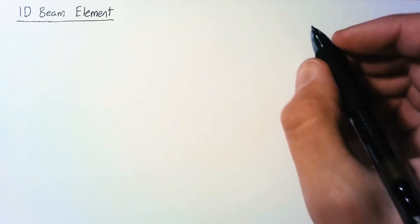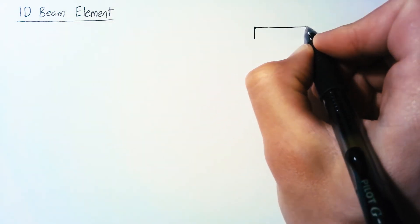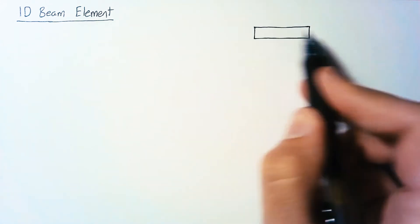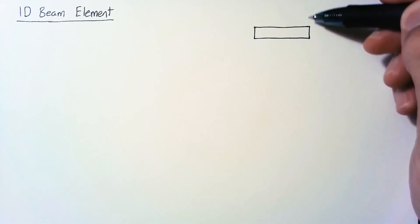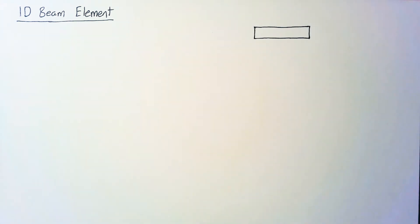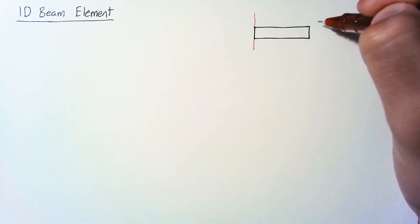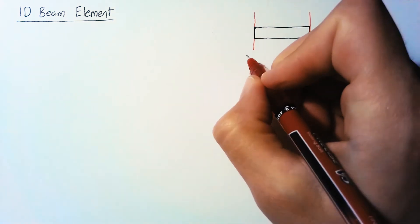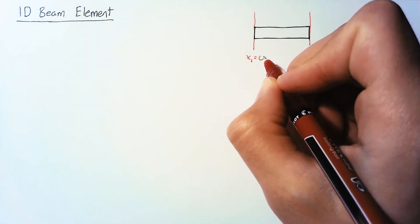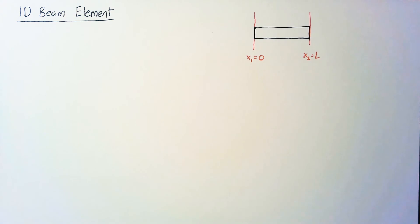Looking at our beam, things are a little bit different than our bar element because this is not allowed to extend or contract. It's only going to be moving vertically and rotationally. The nice part about this is that we can define x1, the position of node 1, as zero, and the position of node 2 as the length of the element, because those will never change.